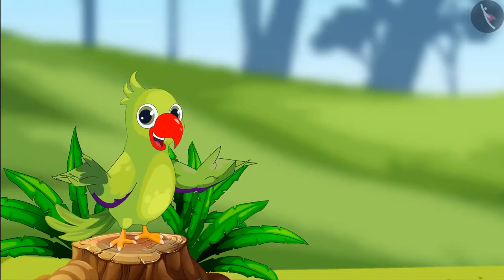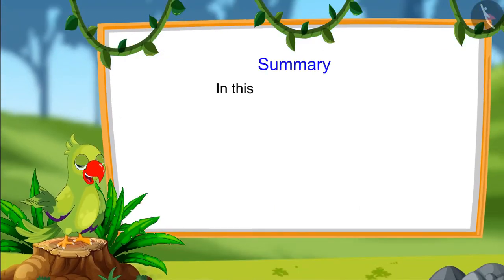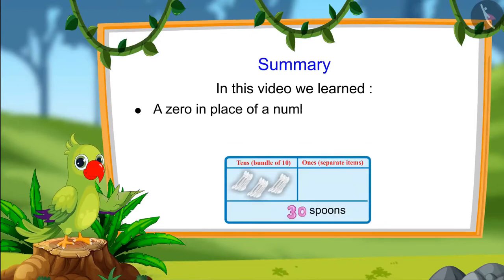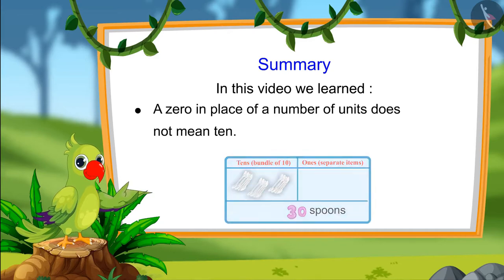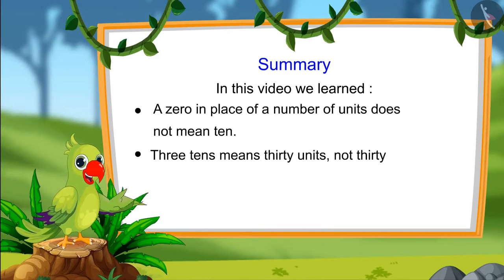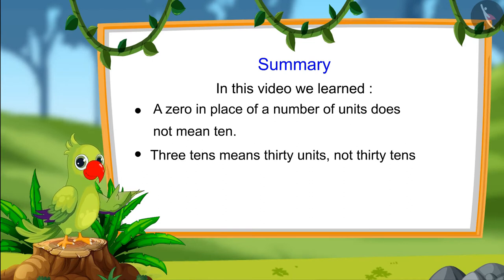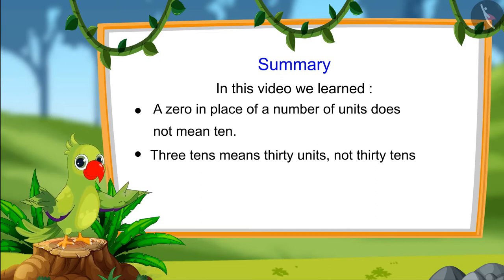So, children, that's all for today. In this video, we learned that 0 does not mean 10 at the end of a number, and 3 tens means 30 units, not 30 tens. I hope you would have understood this topic. Bye, friends.